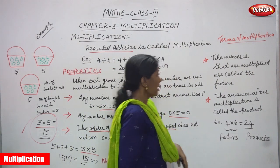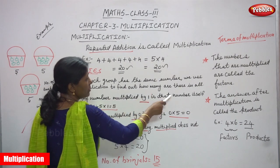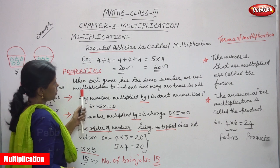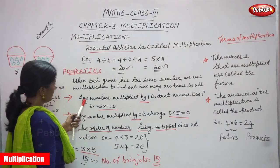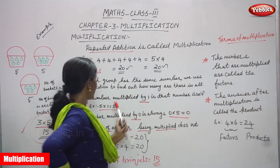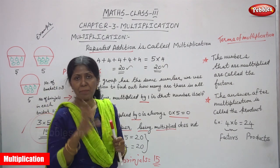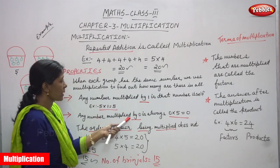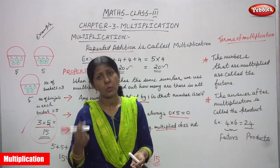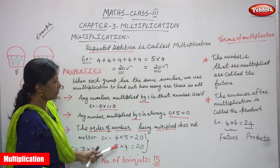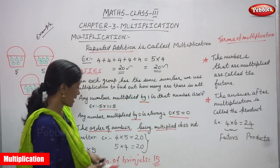Now we must see the terms of multiplication. Let me repeat all three properties: when each group has the same number, we use multiplication to find the total. Any number multiplied by 1 is that number itself — 5 into 1 gives 5. Any number multiplied by 0 is always 0. The order of numbers being multiplied does not matter — you get the same answer.